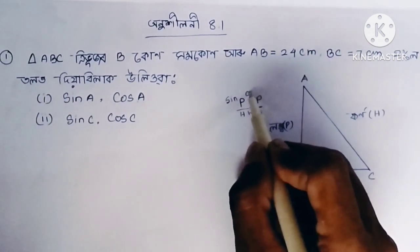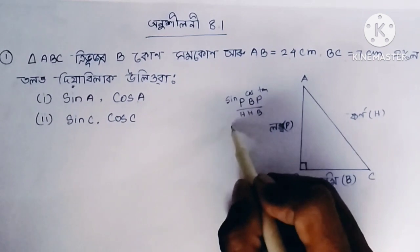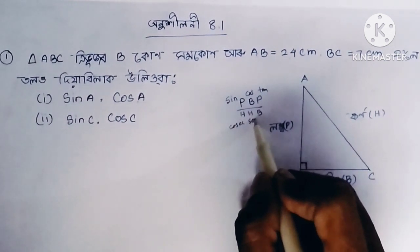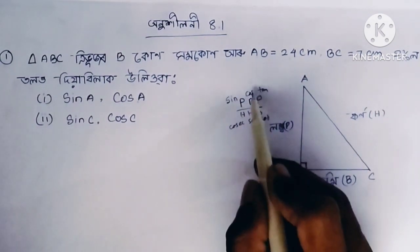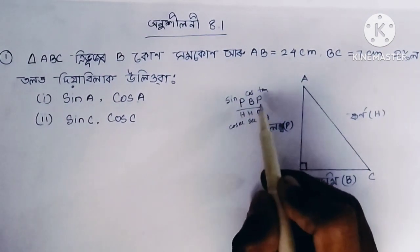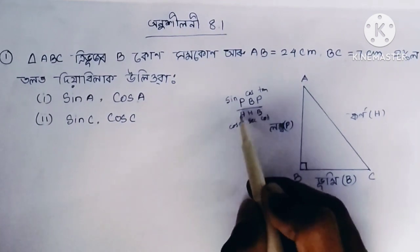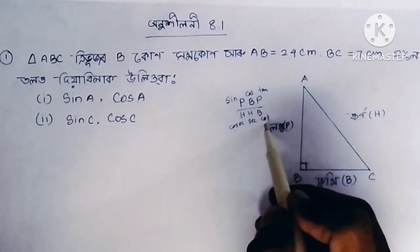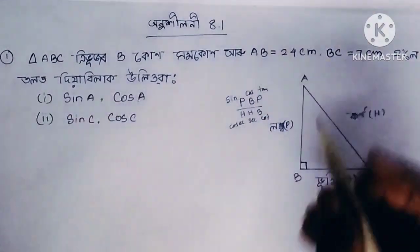Head to hole: sin equals P by H, cos equals B by H, tan equals P by B. Also cosec equals H by P, sec equals H by B, cot equals B by P. These are the six trigonometric ratios.